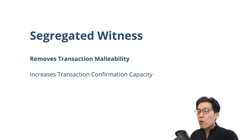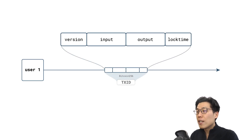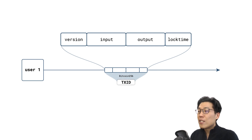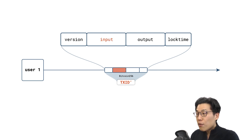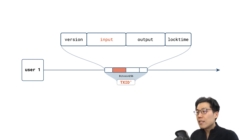Let's first start looking at transaction malleability. Transaction malleability means that the transaction data can be changed without affecting its validity. However, by modifying the transaction data, the transaction ID necessarily changes as well, since it is simply a hash of the serialized transaction data.